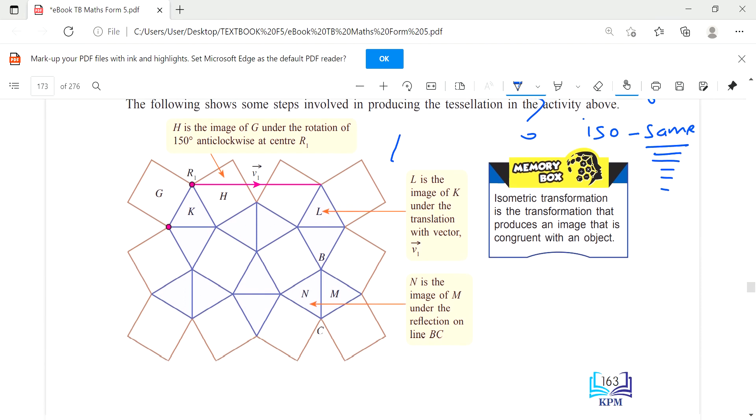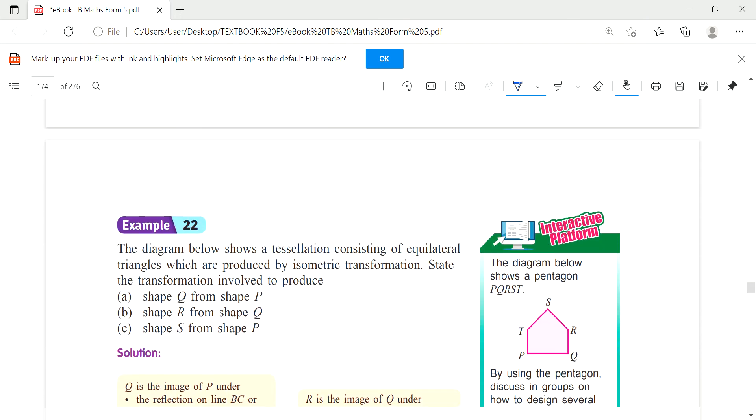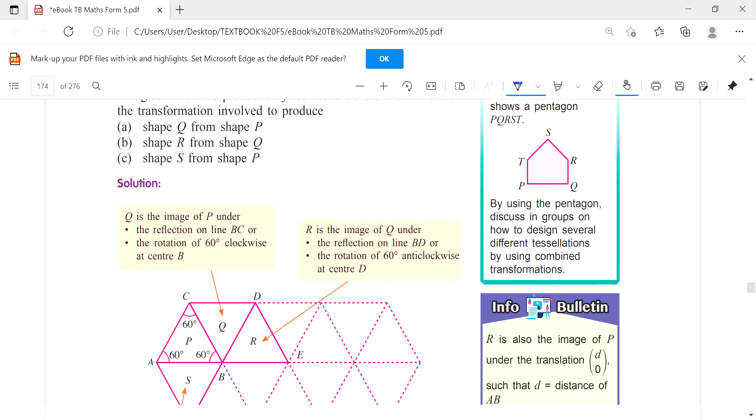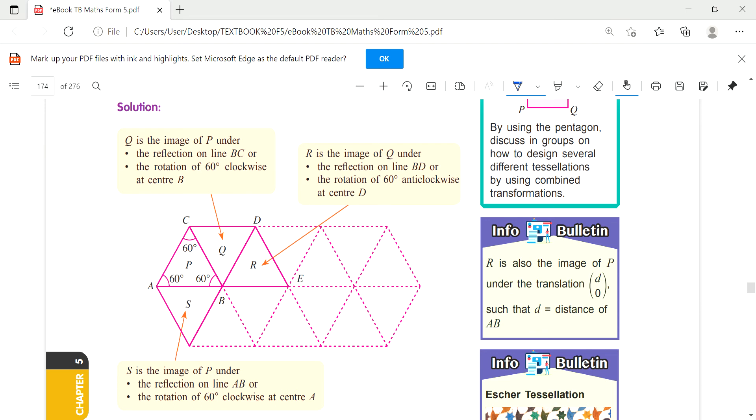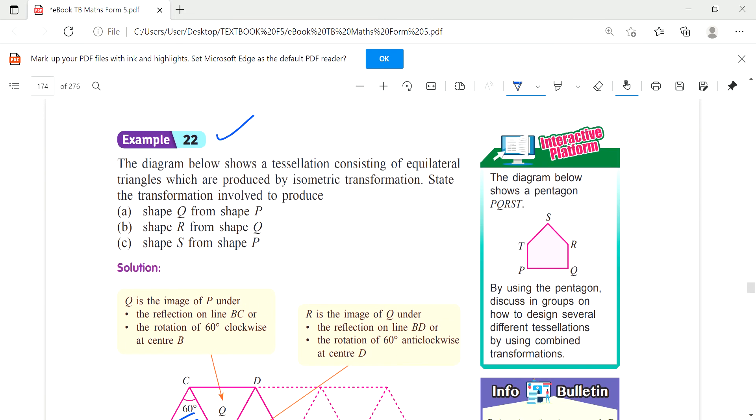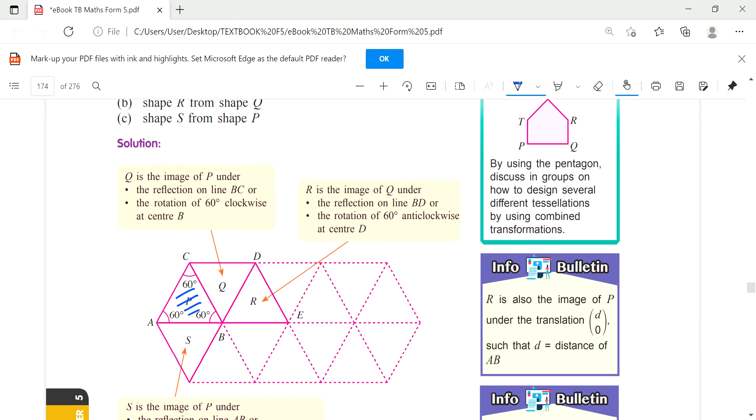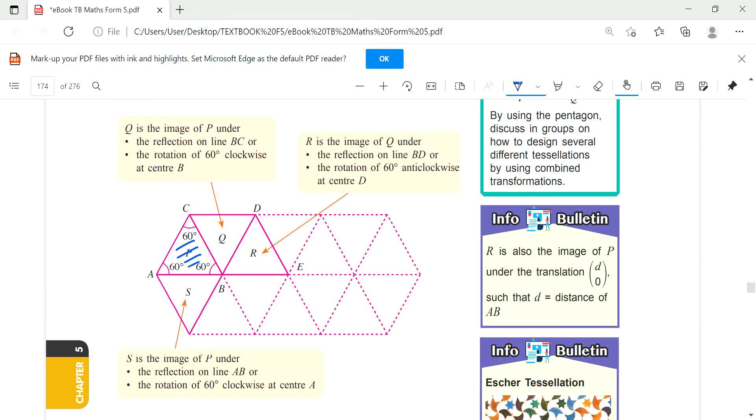If you see here, Example 22 - diagram below, Q is the image of P. You are asked to state the transformation involved. It is said that it's a tessellation produced by isometric transformation. What do you see here is actually Q is the image and there's two transformations. Number one, it's a reflection. The reflection here, this is the line of reflection, BC.